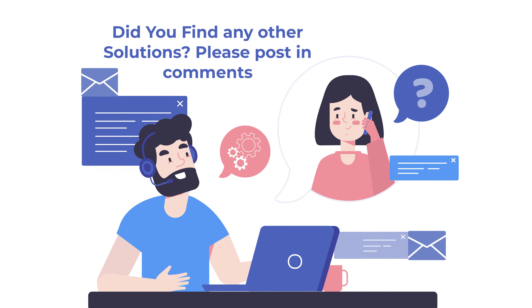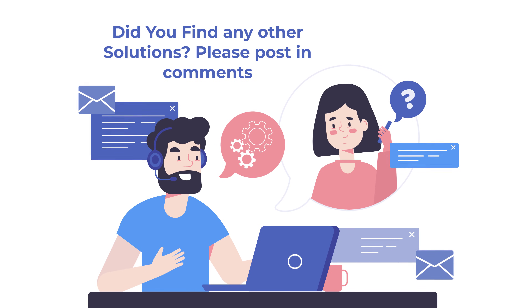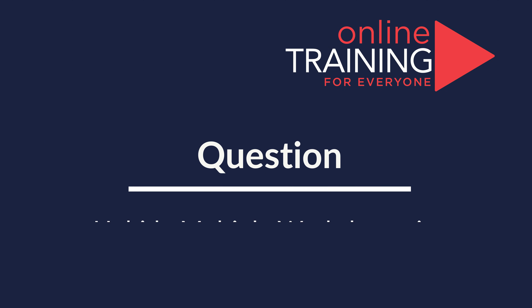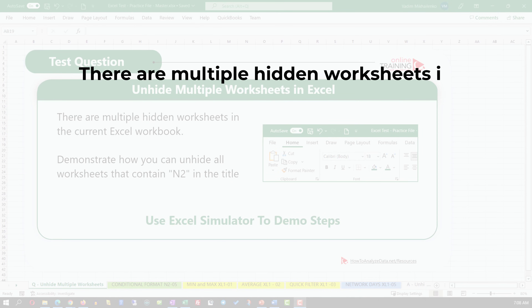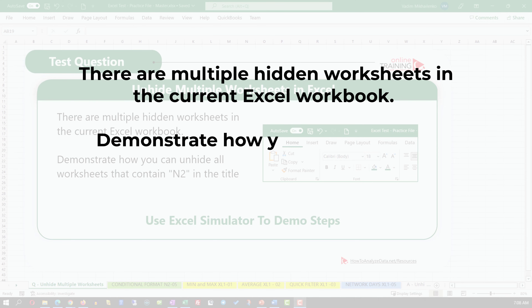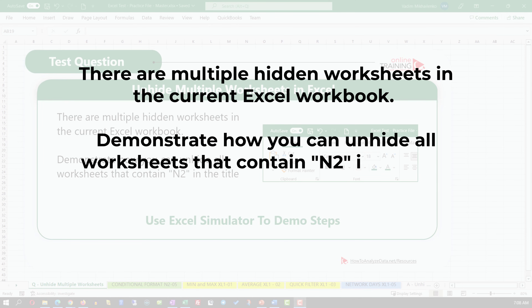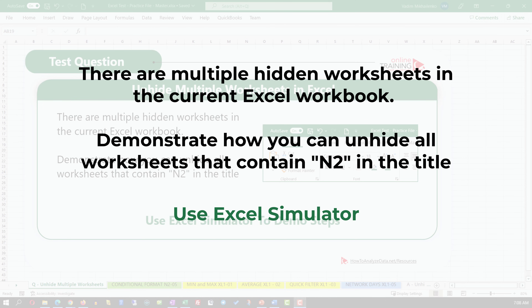Do you know any other formulas that will help accomplish this task? Please make sure to post them in comments. Here's an interesting question we're seeing on the test more and more often: there are multiple hidden worksheets in the current Excel workbook. You need to demonstrate how to unhide all worksheets that contain the string N2 in the title using the Excel simulator.